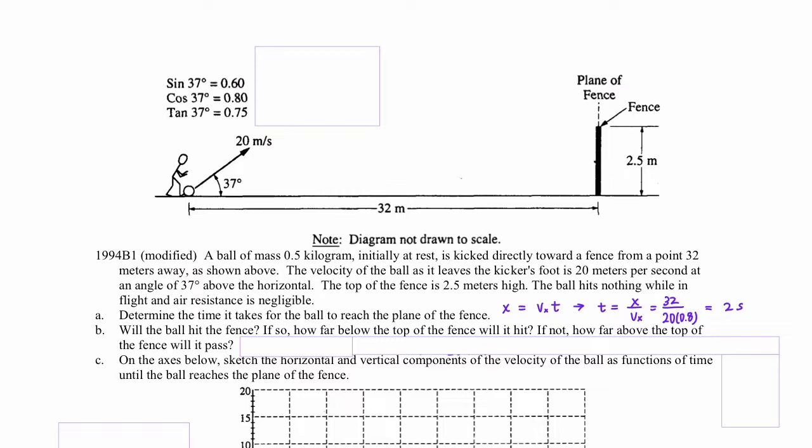Rearranging for T, we divide by V in the x direction on both sides. Looking at the given sine theta, cosine theta, and tan theta values at the top, we can see that velocity in the y direction will be 20 times sine of 37, and the velocity in the x direction will be 20 times cosine of 37. So the total time that the ball is in the air is 2 seconds — 32 divided by 20 times 0.8.